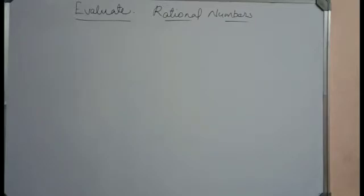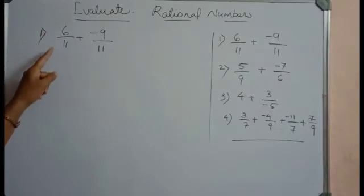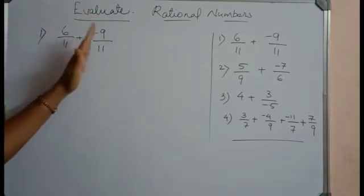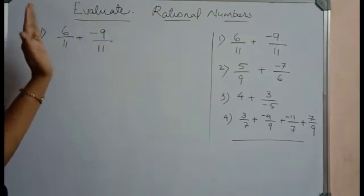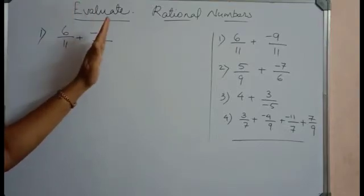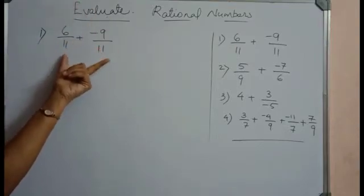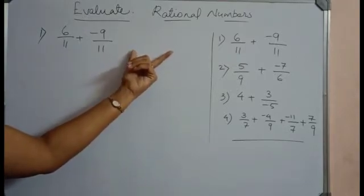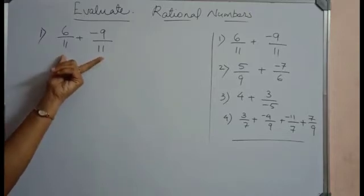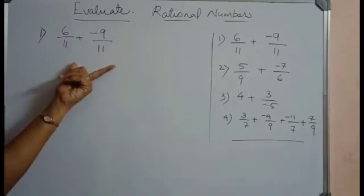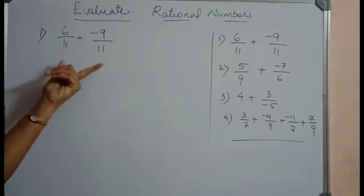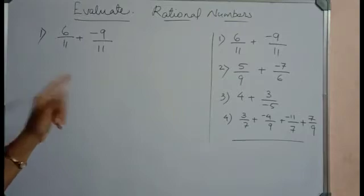Consider the first question: 6/11 + (-9/11). Here you can evaluate and find the value, and one more property we can prove here, that is the commutative property as well as the closure property. Whenever you are finding the sum, if you are getting again a rational number, the closure property will be proved. Even the commutative property can also be proved using the same question. First, let's find what is the sum of 6/11 + (-9/11).